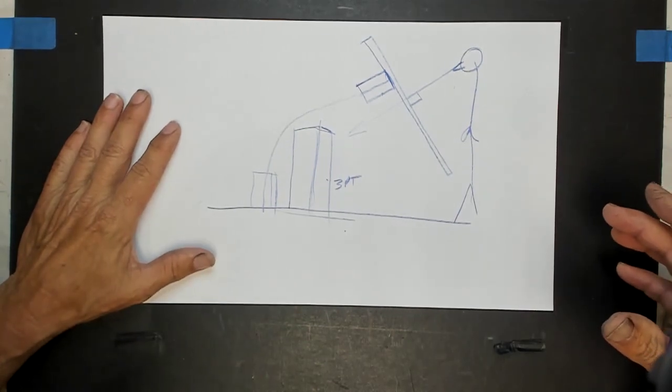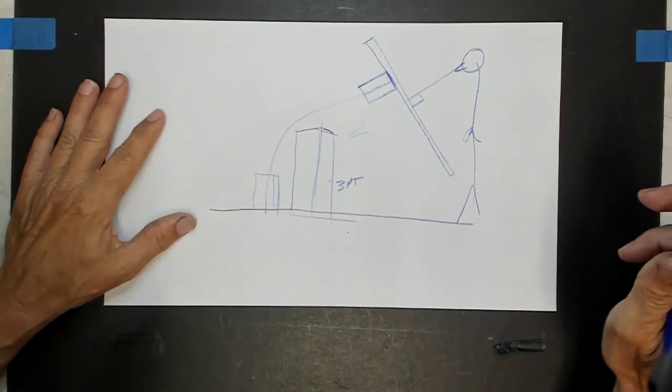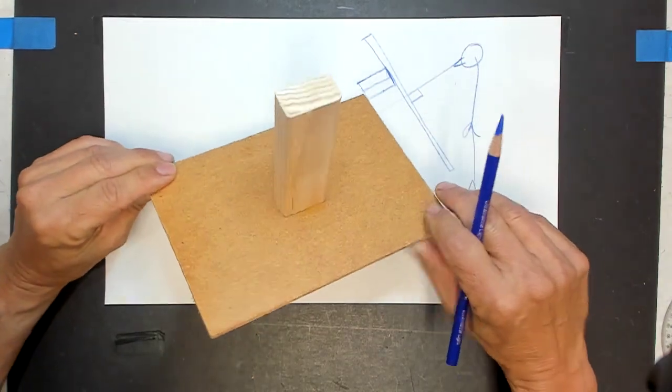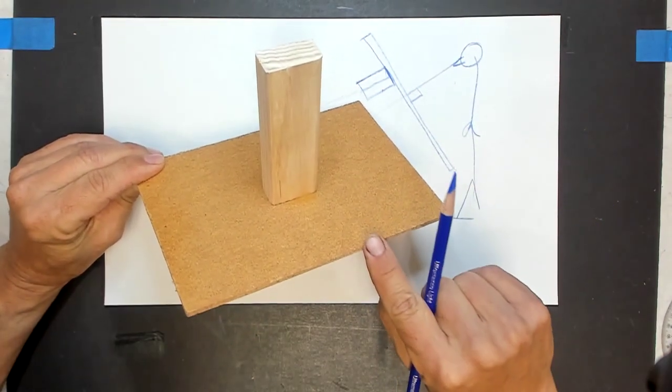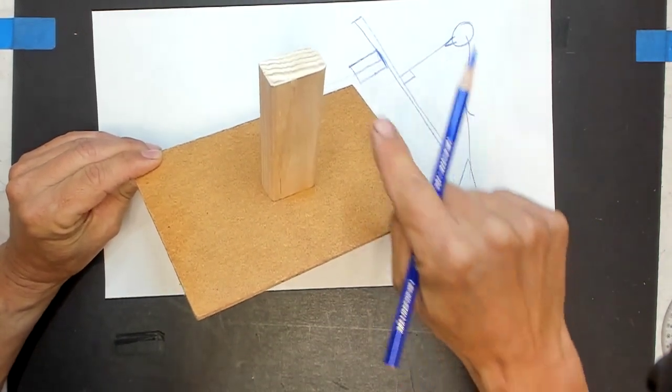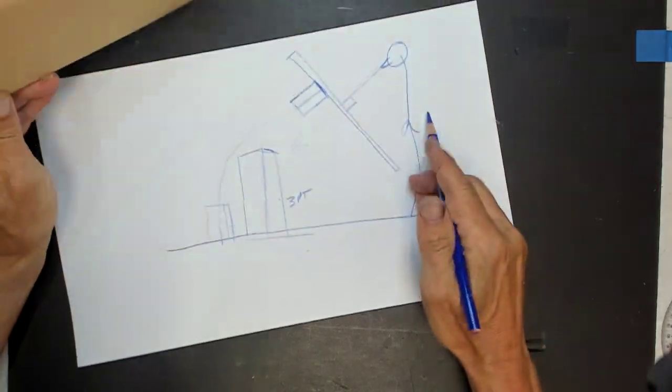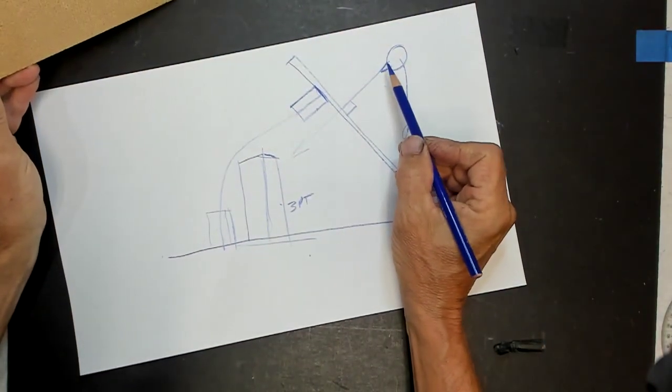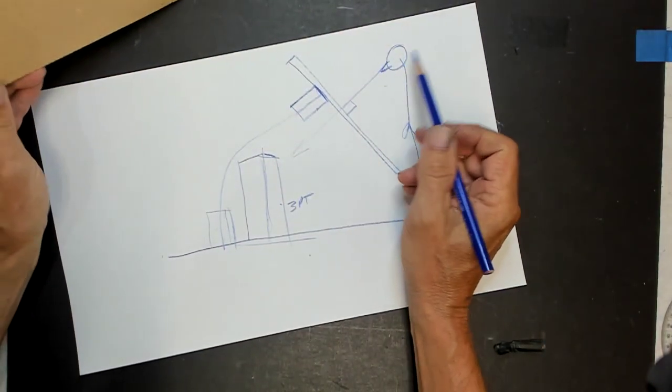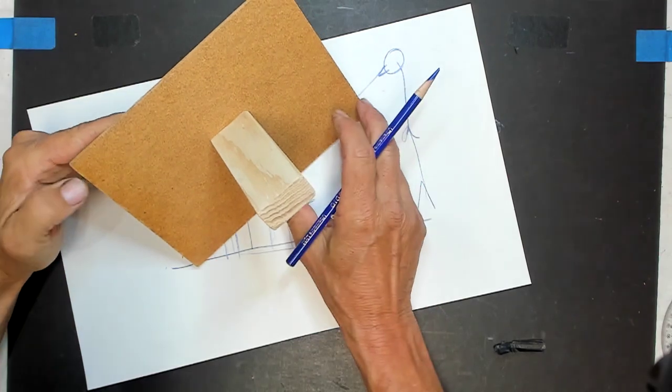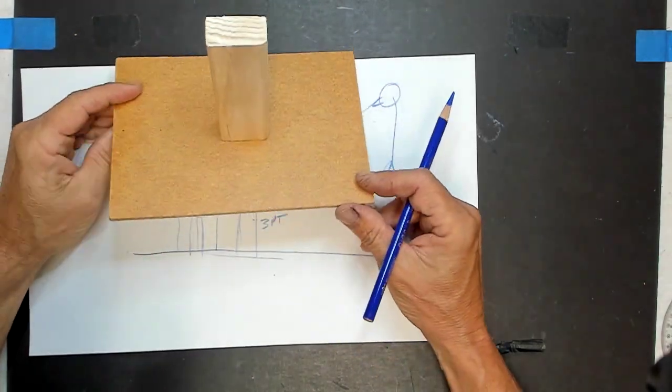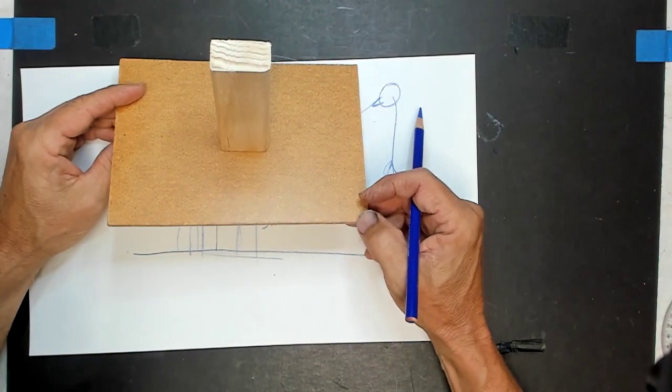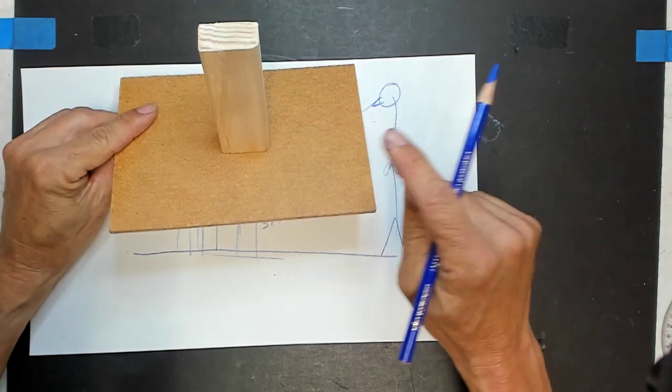So I thought for this one maybe we'll do something really specific as kind of a review of what we did in three-point perspective in the past. So maybe we can draw this exact thing to scale and we'll have the viewer looking at it at a particular angle.